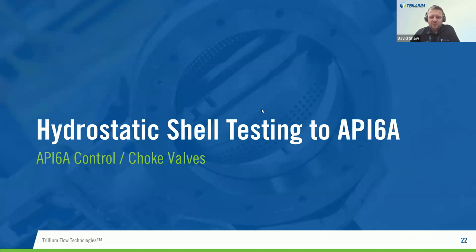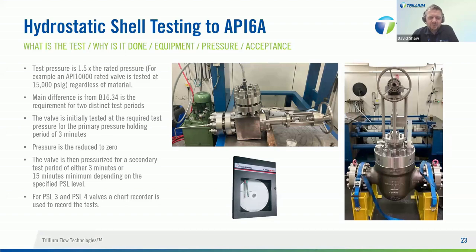Hydrostatic shell testing to API 6A — for the valves we do here at Elland, this applies mainly to choke valves, though within other Trillium companies we have API 6A ball valves tested in a similar manner. The actual testing is similar to the B16.34 shell test. The test pressure is 1.1 times the rated pressure. It's simpler to apply on API-rated products because you don't have the different material groups and you're generally not dealing with elevated temperatures. An API 10K rated valve, for example, is tested at 15,000 PSI regardless of material.